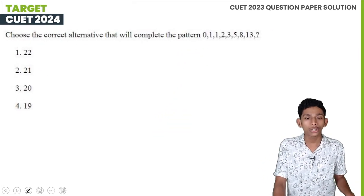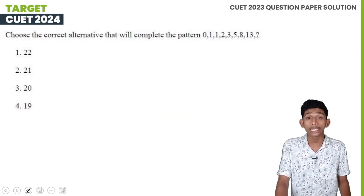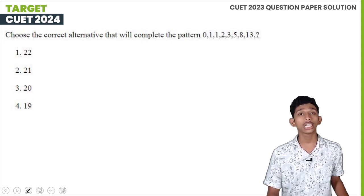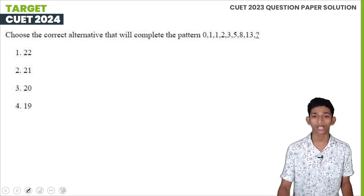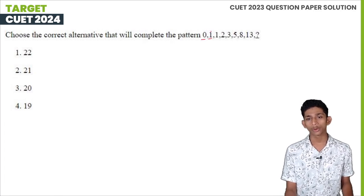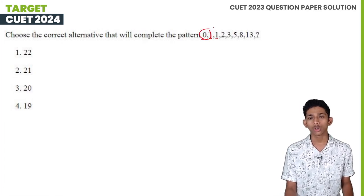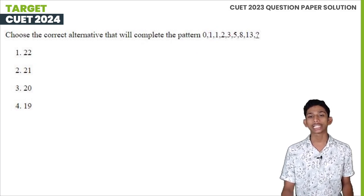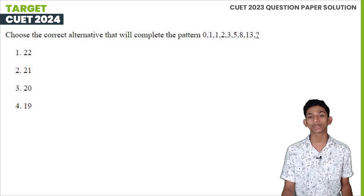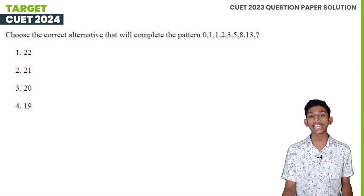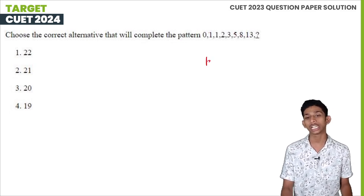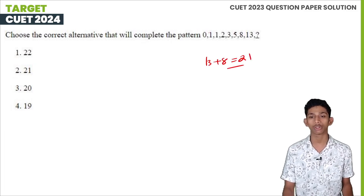Choose the correct alternative that will complete the pattern: 0, 1, 1, 2, 3, 5, 8, 13. The second term is 0 and 1. Then 1 plus 1 is 2, next 2 plus 1 is 3, next 3 plus 2 is 5, next 3 plus 5 is 8, next 5 plus 8 is 13. That means 13 plus 8 equals 21. So the next term is 21.